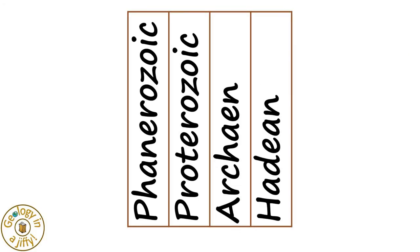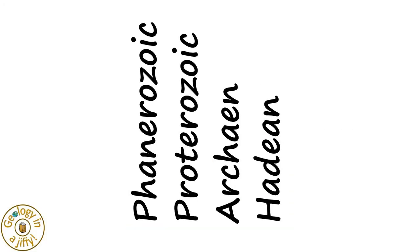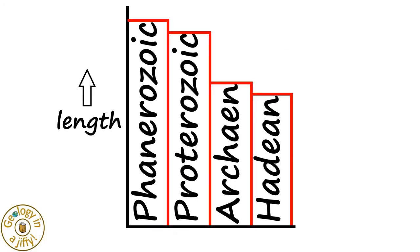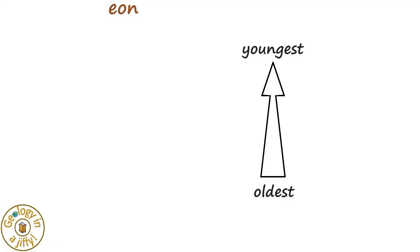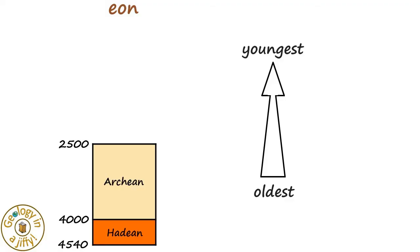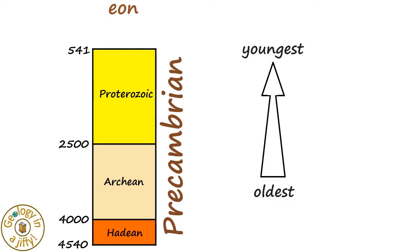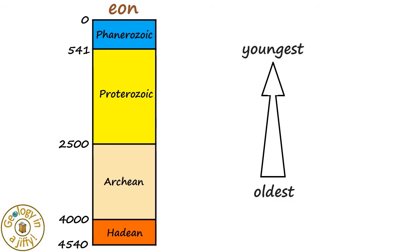However, these time intervals are not equal in length, which we can see with this time column. Starting with the oldest, the Hadean, then the Archean, the Proterozoic, and most recently, the Phanerozoic.